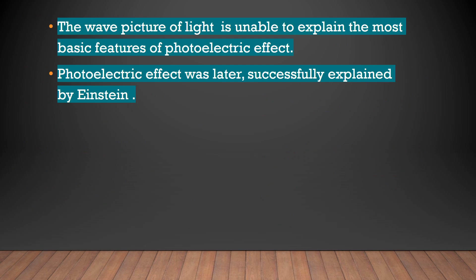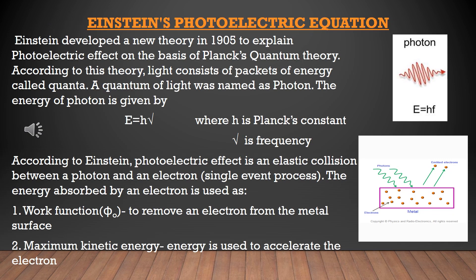From the previous slide, it is clear that the wave theory of light was not able to explain the most basic features of photoelectric effect. Photoelectric effect was later explained by the well-known scientist Einstein by using Planck's quantum theory. Einstein developed a new theory in 1905 to explain photoelectric effect on the basis of Planck's quantum theory. According to this, light consists of packets of energy called quanta. A quantum of light was named as photon.